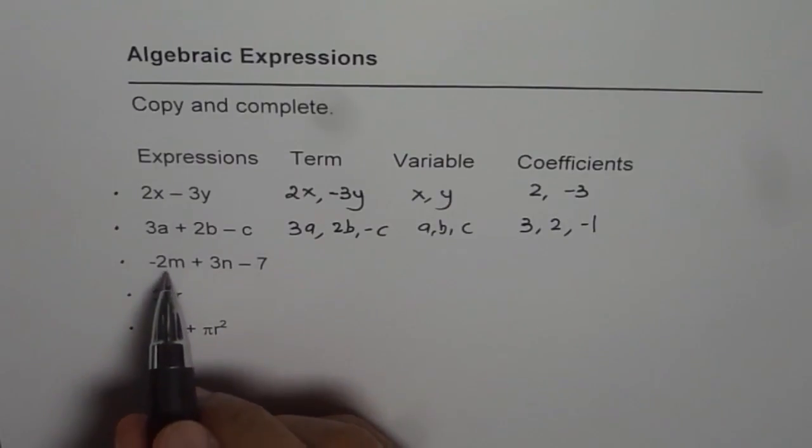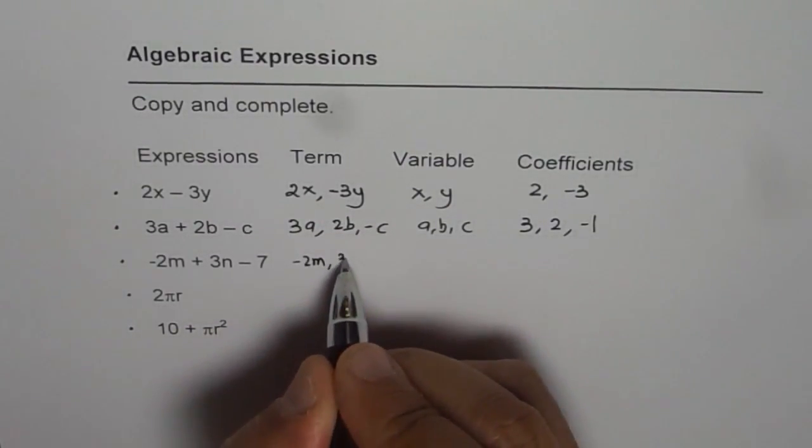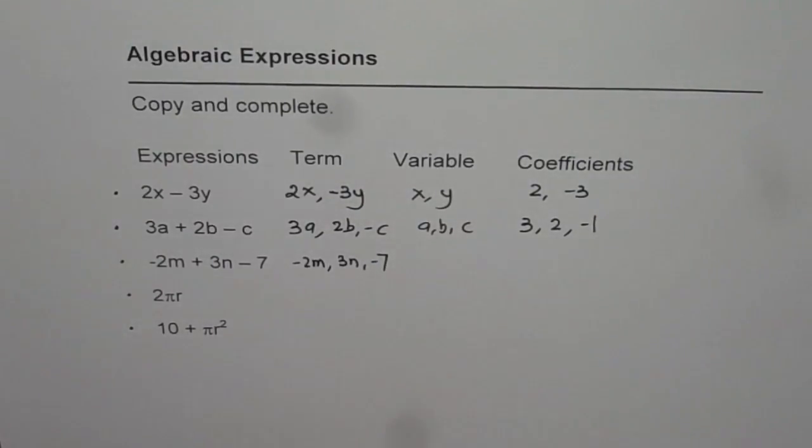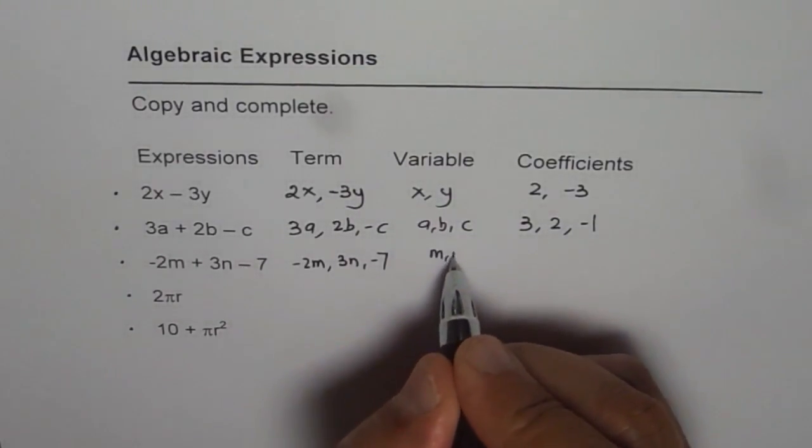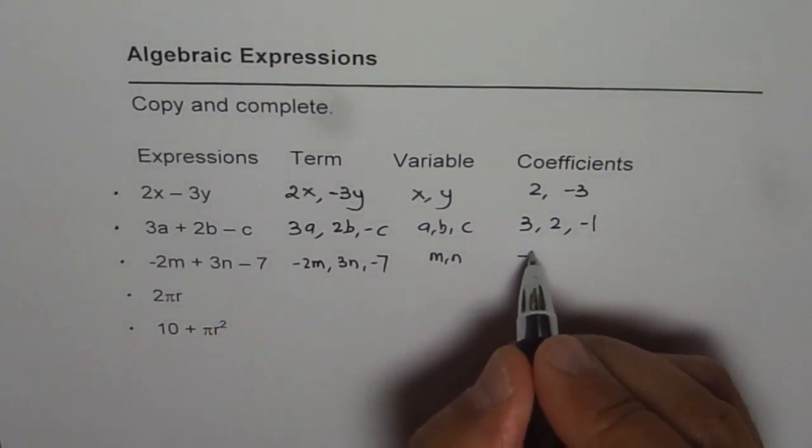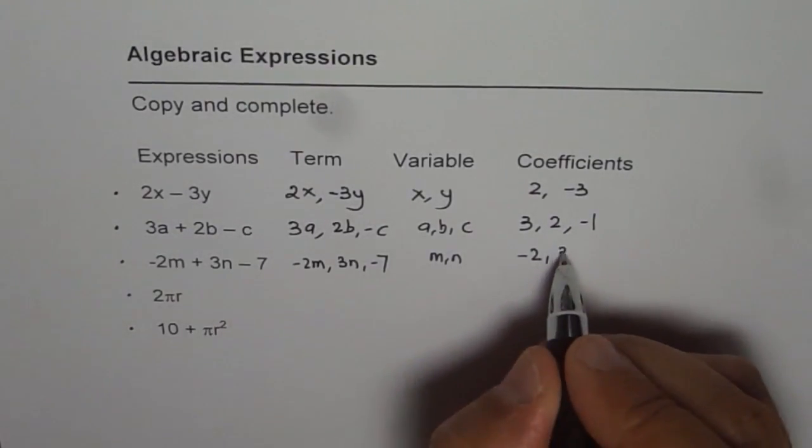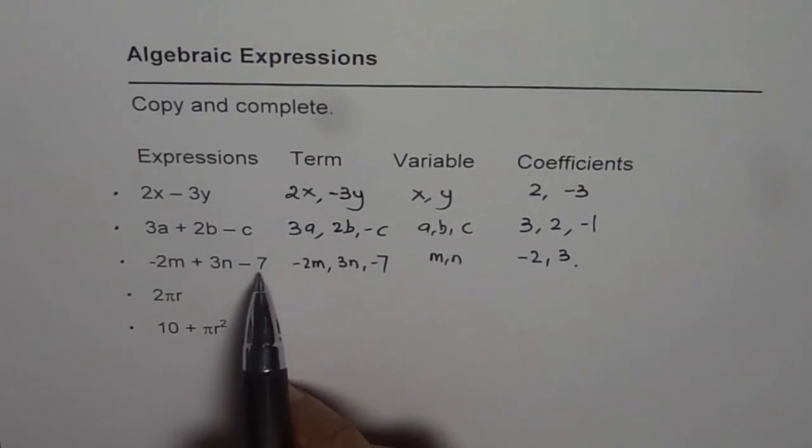The next one has three terms. The terms are minus 2m, 3n, and minus 7. A constant is also treated as a term. Variables in this case are m and n. The coefficients are, coefficient for m is minus 2, for n is 3, and that's it. Minus 7 is a constant.